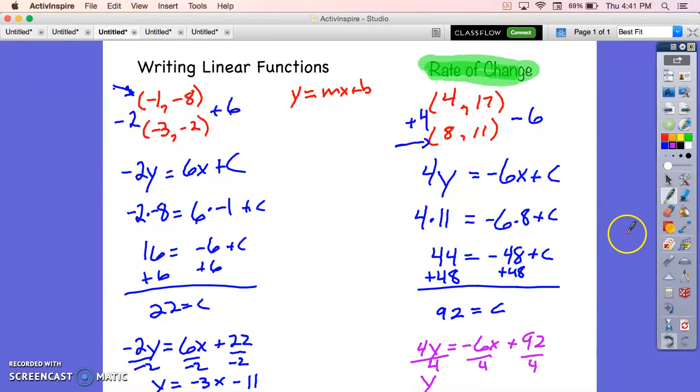Y would equal negative 6 fourths, which I can simplify, and I believe that's 23. And there you go. The rate of change way of getting a function between two points. Thanks for watching.